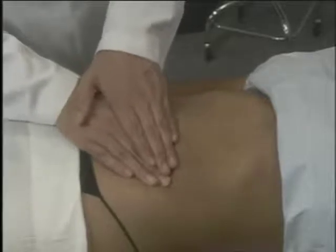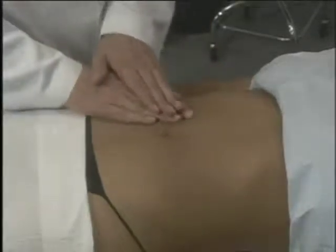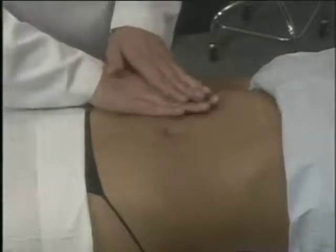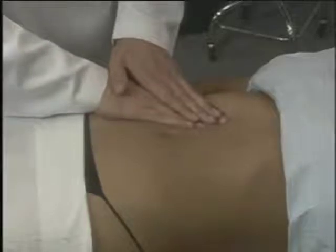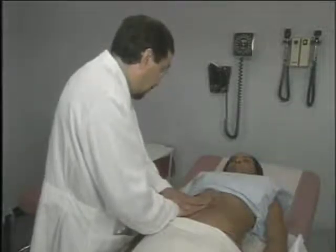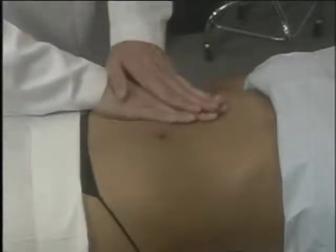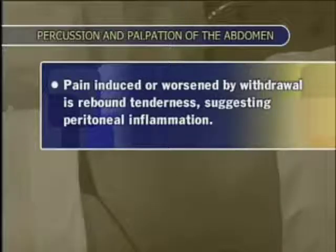To localize pain in the abdomen, ask the patient to cough and then show you where it hurts. Next, assess any guarding — palpate lightly then more deeply to see if applying pressure elicits tenderness or pain. To check for rebound tenderness, press your fingers in firmly and slowly, then quickly withdraw them. Watch the patient's facial expression and listen for any sounds of pain on release. Pain induced or worsened by withdrawal is rebound tenderness, suggesting peritoneal inflammation.